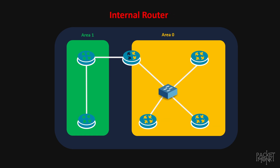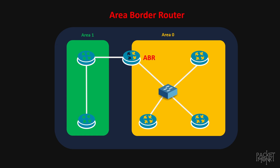Next one is internal routers. They are the routers inside an area — this can be area zero or any other area. The only thing is that all their interfaces must belong to the same area. Here in this example, this router is an internal router because all its interfaces belong to area one. Whereas this router has one interface in area zero and one in area one, so these kinds of routers are called ABRs or area border routers.